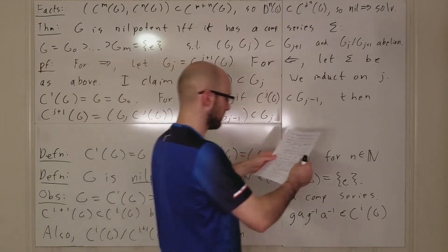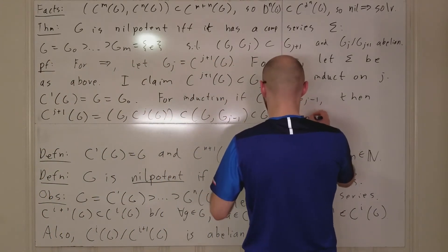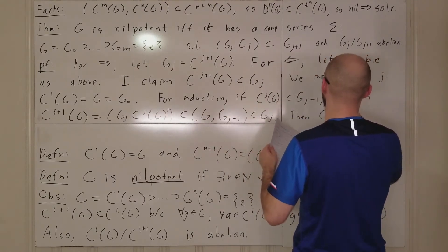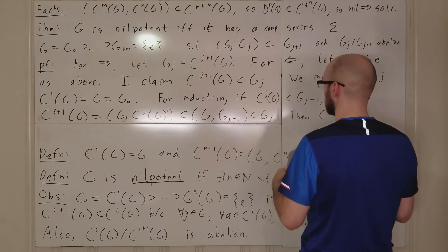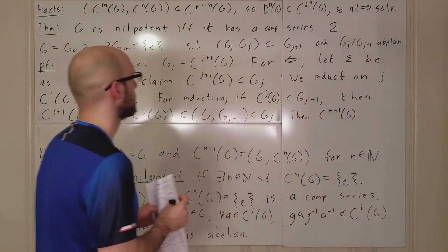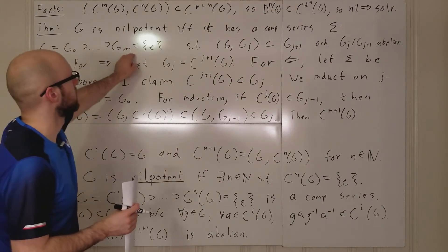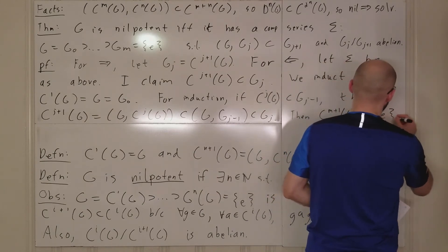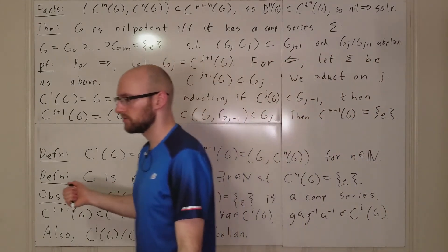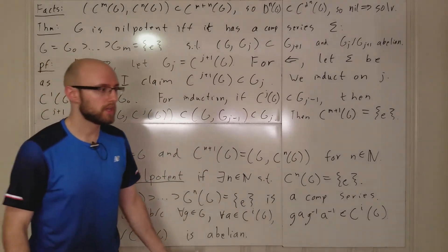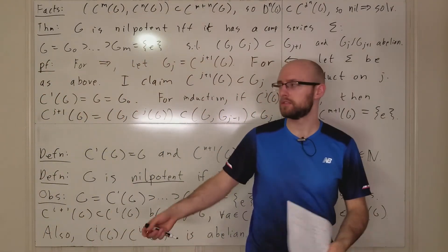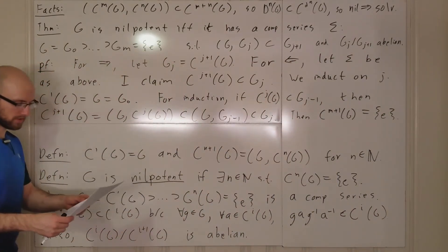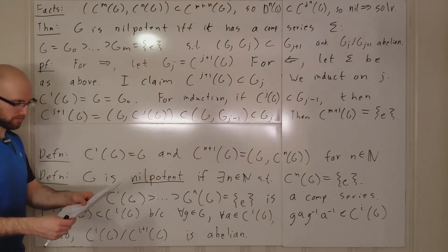So if it holds for j then it holds for j+1. Therefore C^{m+1}(G) is contained in G_m, which is trivial. So there exists a natural number, namely m+1, such that C^{m+1}(G) is trivial, and that's exactly what we need for a group to be nilpotent. That completes the proof.